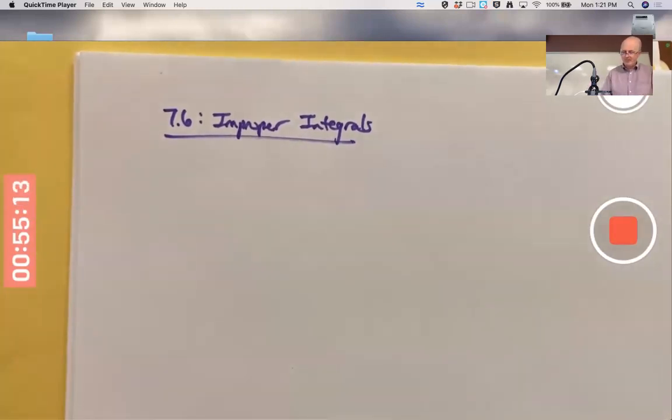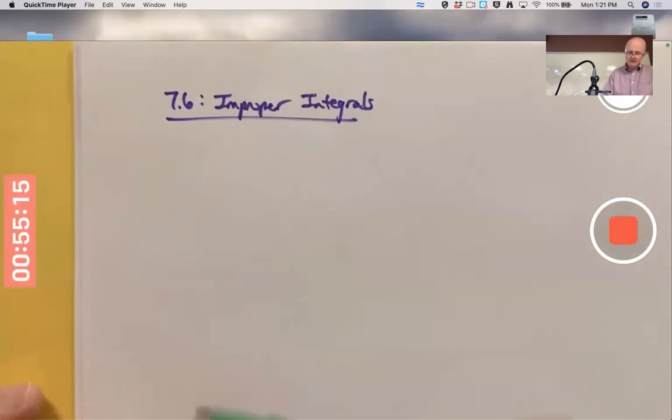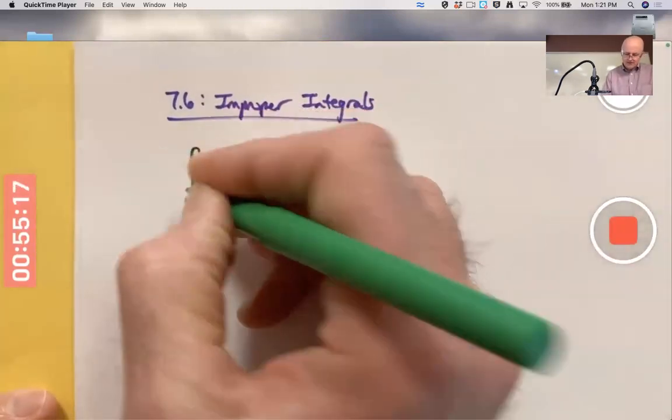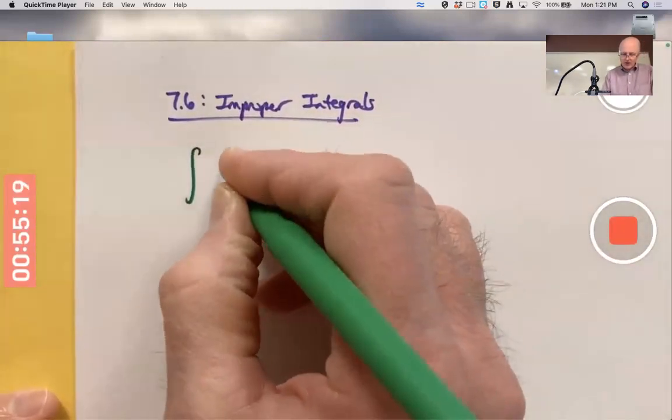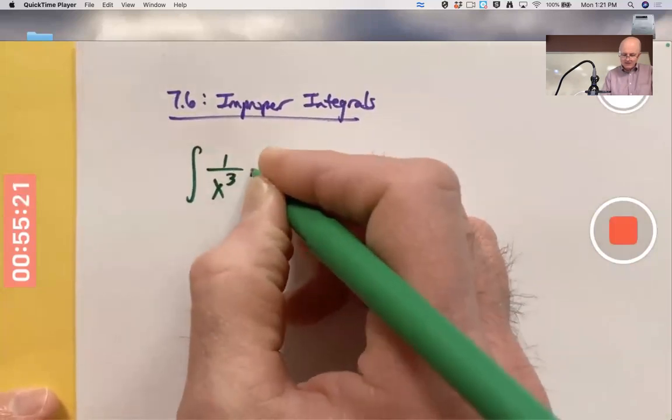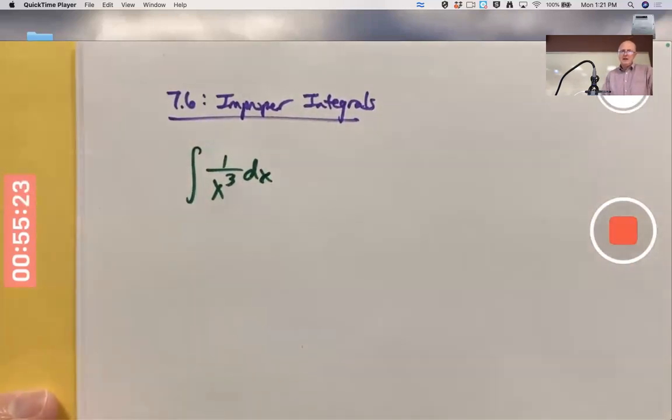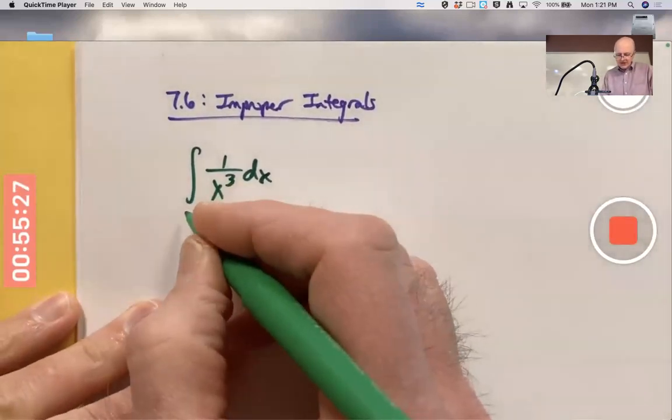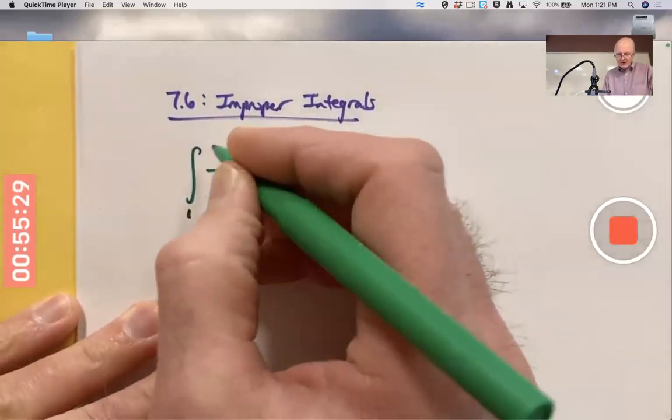Let's do the first kind. Let's say we're integrating 1 over x cubed and the interval of integration is going to be, let's say, 1 to infinity.